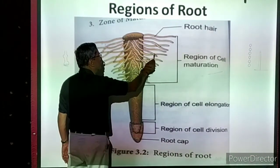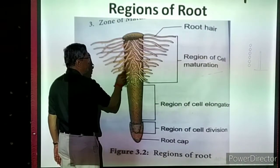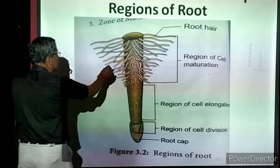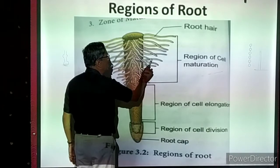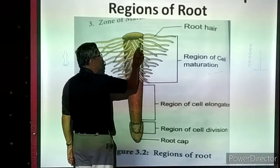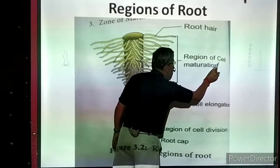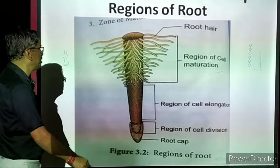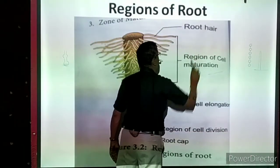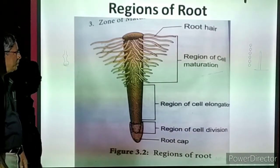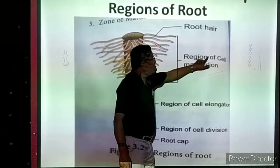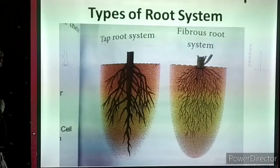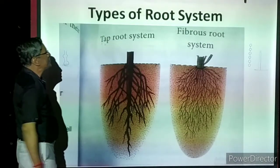Above the region of cell elongation, there are enormous numbers of microscopic hair-like structures. They are long outgrowths — hair-like outgrowths. This is a region where root hairs are present. The cells are becoming maximum in size, which is called cell maturation. The hair-like structures present are called root hairs, and we call this the region of cell maturation — or the region of root hairs.